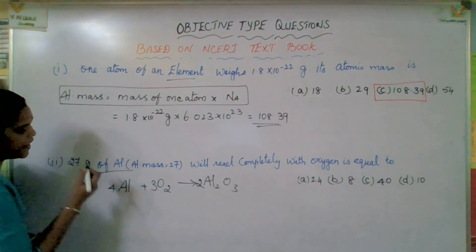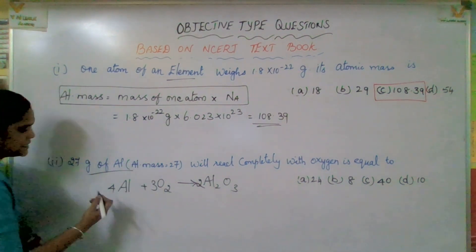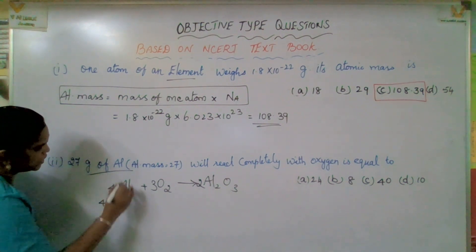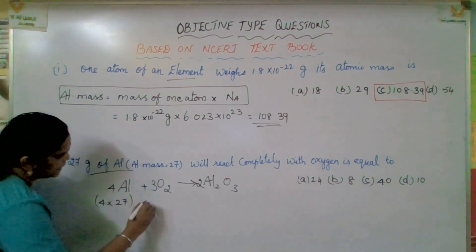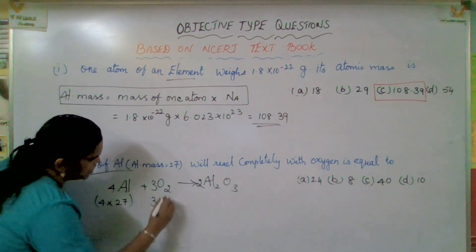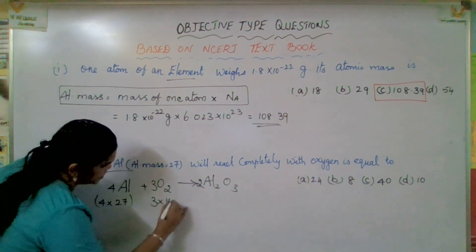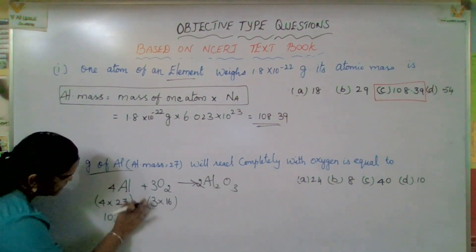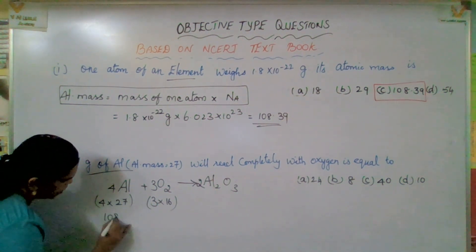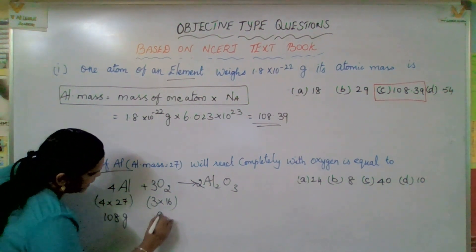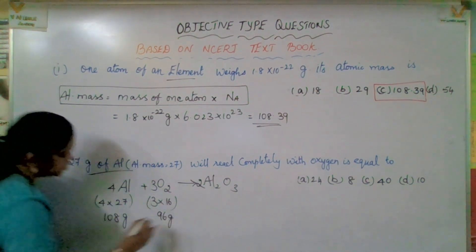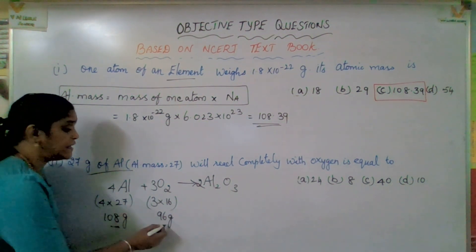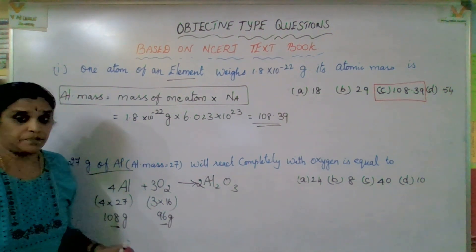Now let us identify how much gram of aluminium and oxygen is here. 4 into aluminium atomic mass 27, and 3 into oxygen atomic mass — in O2 it is 16. That means here 108 gram of aluminium requires 96 gram of oxygen.